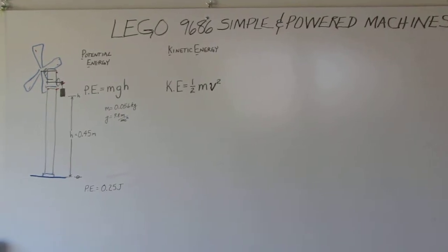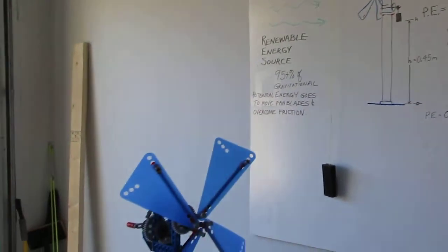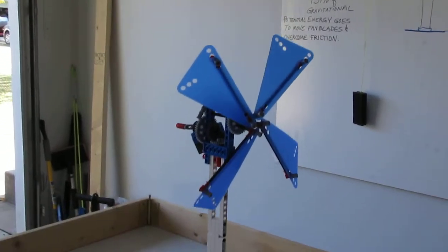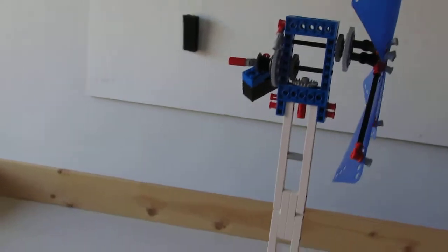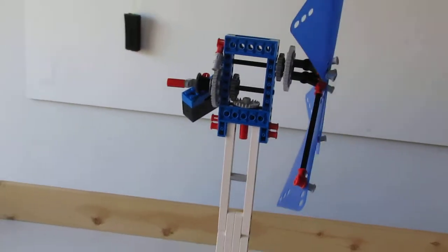It uses potential energy and turns into kinetic energy with this little weight thing right here. 95% of the gravitational potential energy goes to move the fan blades and overcome friction. So that's pretty awesome.